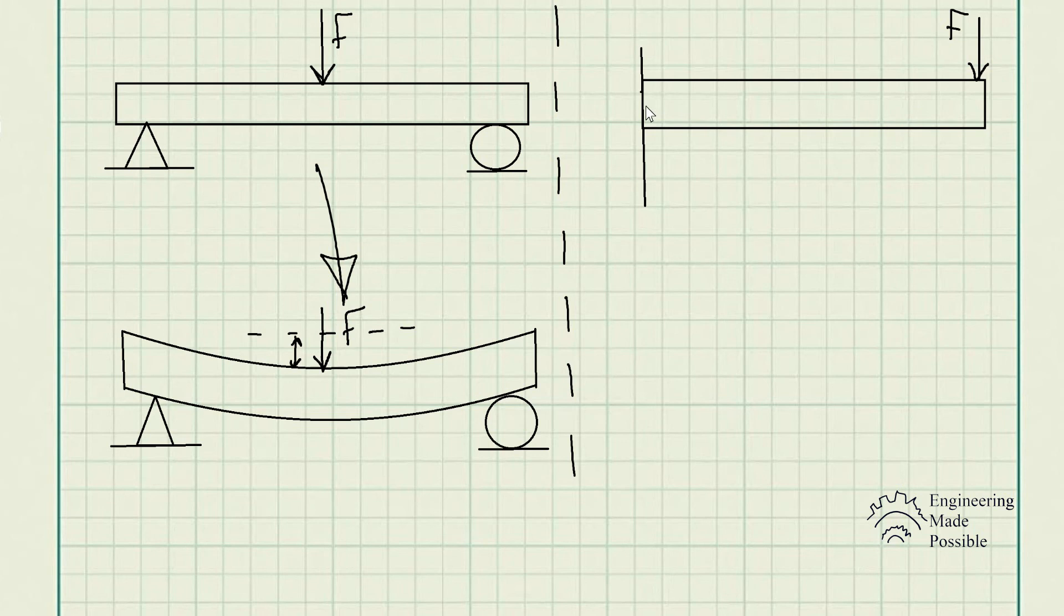Another example has a very similar situation here where we have this beam being fixed to the wall or some support, and we have an external force at the other end being applied. This is commonly referred to as a cantilever beam. Once this force is applied, there will be some deformation or deflection of that beam. In reality, it will actually look a little bit more like this, where we actually see some deflection or deformation of this beam because it's bending due to that force being applied.